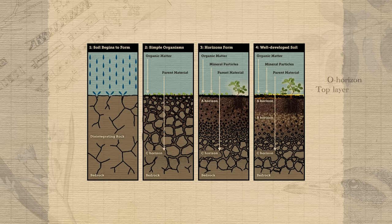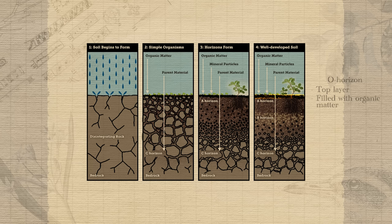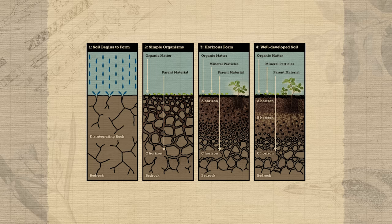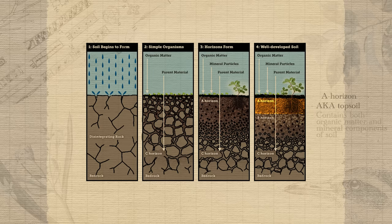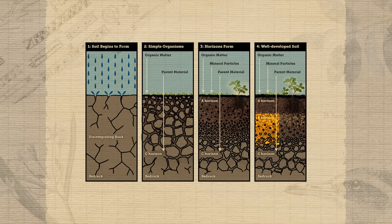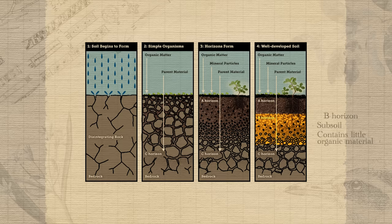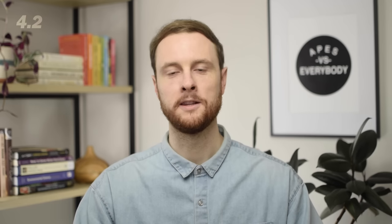If we look at the different layers or horizons of a well-developed soil, we can see that the very top layer is actually organic matter — the O horizon — filled with decomposers, plant roots, and partially decomposed biomass. Then we have the A horizon, or topsoil, which contains both organic matter and mineral components including nutrients like nitrogen and phosphorus, as well as water and oxygen in its pore spaces. Below that is the B horizon, or subsoil, which holds little organic material but still contains nutrients. Finally, the C horizon contains parent material rocks that have undergone very little weathering.